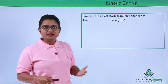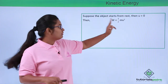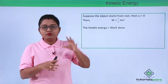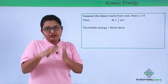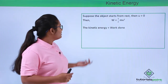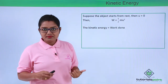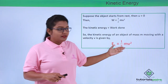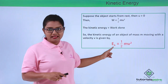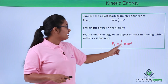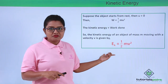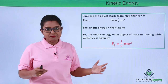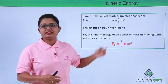This expression gives us the work done on the body to raise its velocity to v. We have already seen that the kinetic energy of a body is exactly equal to the work done on the body to raise its velocity to a certain level. So the kinetic energy of an object with mass m moving with velocity v is given by EK = ½mv². This is the expression for kinetic energy that we can use whenever we need to find the kinetic energy of an object.